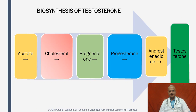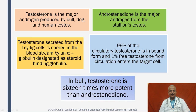Testosterone is synthesized as follows: acetate is converted to cholesterol, cholesterol to pregnenolone, to progesterone, to androstenedione, and then finally to testosterone. Testosterone is the major androgen produced by the bull, dog, and human testes, whereas androstenedione is the major androgen from the stallion testes. Testosterone secreted from the Leydig cells is carried in the bloodstream by alpha globulin designated as steroid binding globulin. 99% of circulating testosterone is in bound form, and 1% as free testosterone which enters the circulation and reaches the target cell. In the bull, testosterone is 16 times more potent than androstenedione.